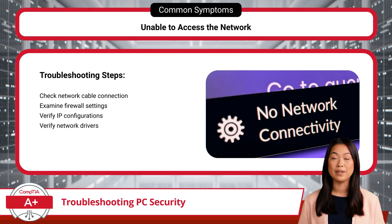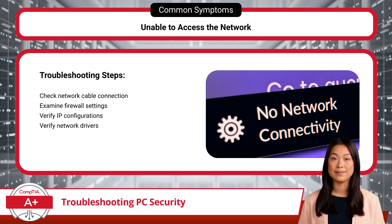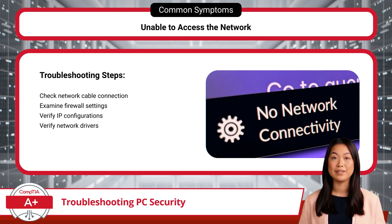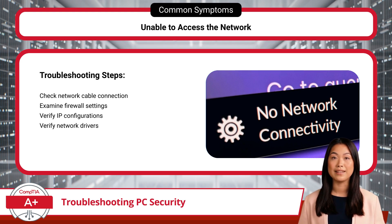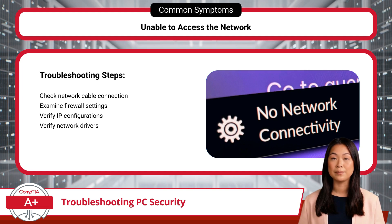First up, let's discuss network access issues. If a user can't connect to a network, start by checking the network cable connection. Sometimes the smallest issues, like a loose or disconnected cable, can be the culprit. If the physical connection is fine, take a look at firewall settings, as they may be blocking access due to security rules. Also check IP configurations and network drivers, as these components play key roles in maintaining secure network access, and a simple misconfiguration can often disrupt connectivity.